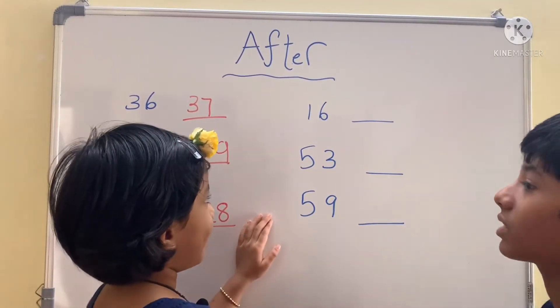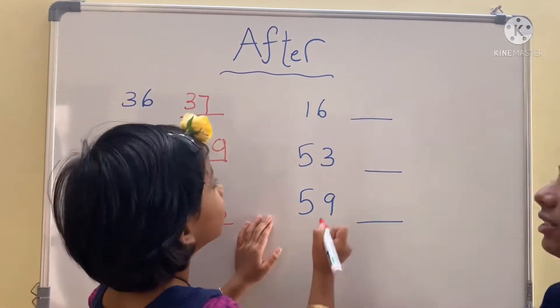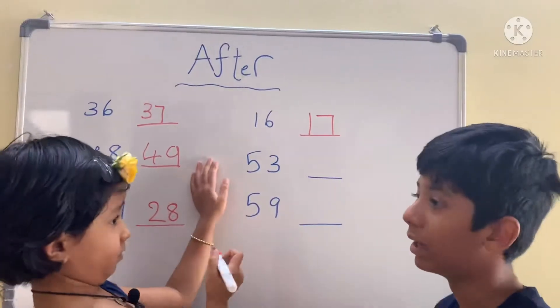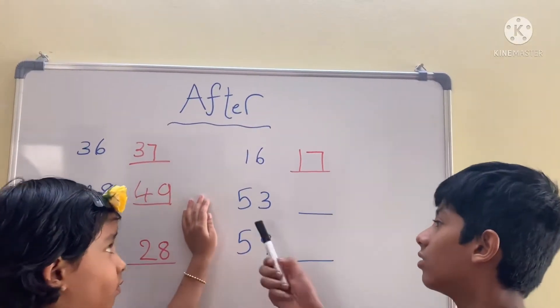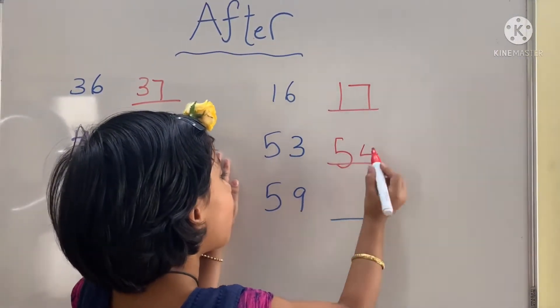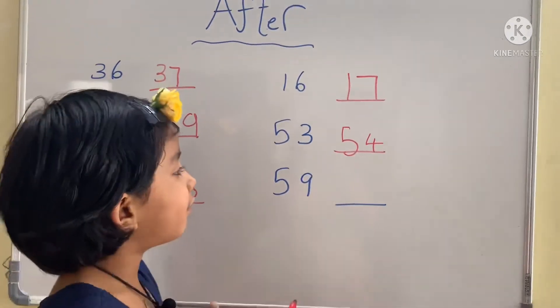What number comes after 16? One ten, seven ones, 17. What number comes after 53? Five tens, four ones, 54.